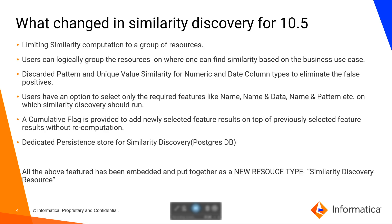So what exactly has changed in similarity discovery for 10.5? In 10.5, we can limit the similarity computation to a group of resources. Users can logically group resources based on their business use case. We can discard pattern and unique value similarity for numeric and data type columns to eliminate false positives. Users have an option to select only the required features like name, name and data, name and pattern, etc., on which similarity discovery should run. A cumulative flag is provided to add newly selected feature results on top of previously selected feature results without any recomputation. A dedicated persistent store for similarity discovery has been provided in the form of a PostgreSQL DB, which is a feature from Informatica cluster service.